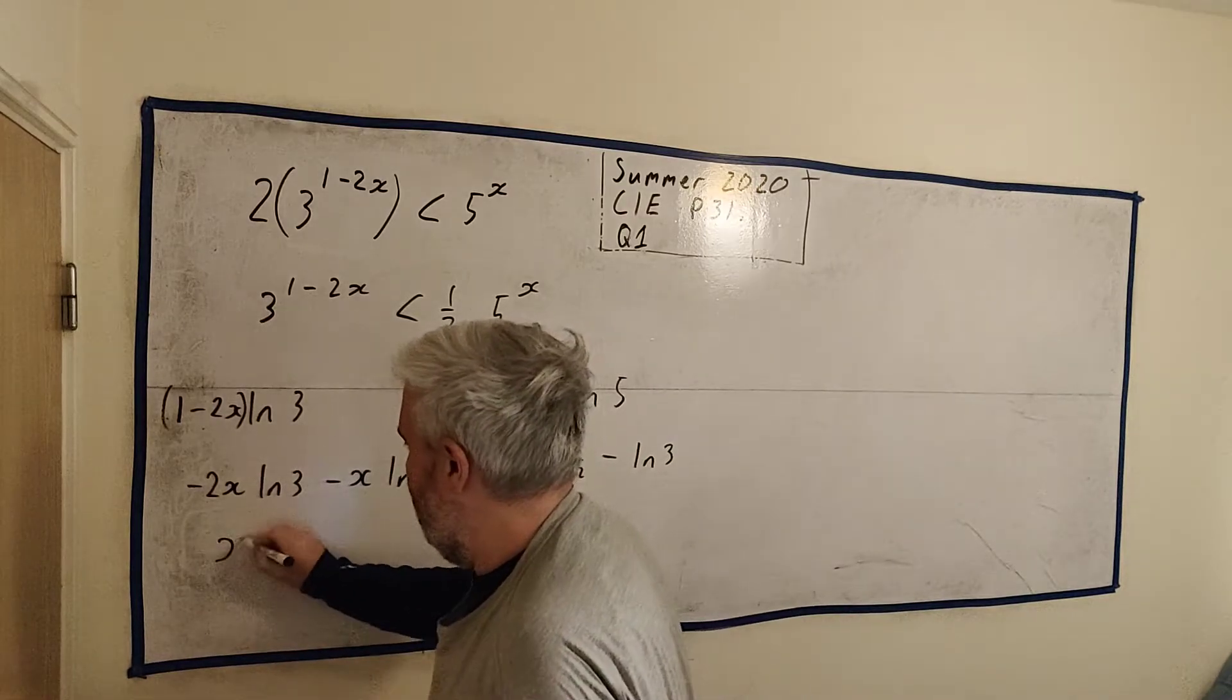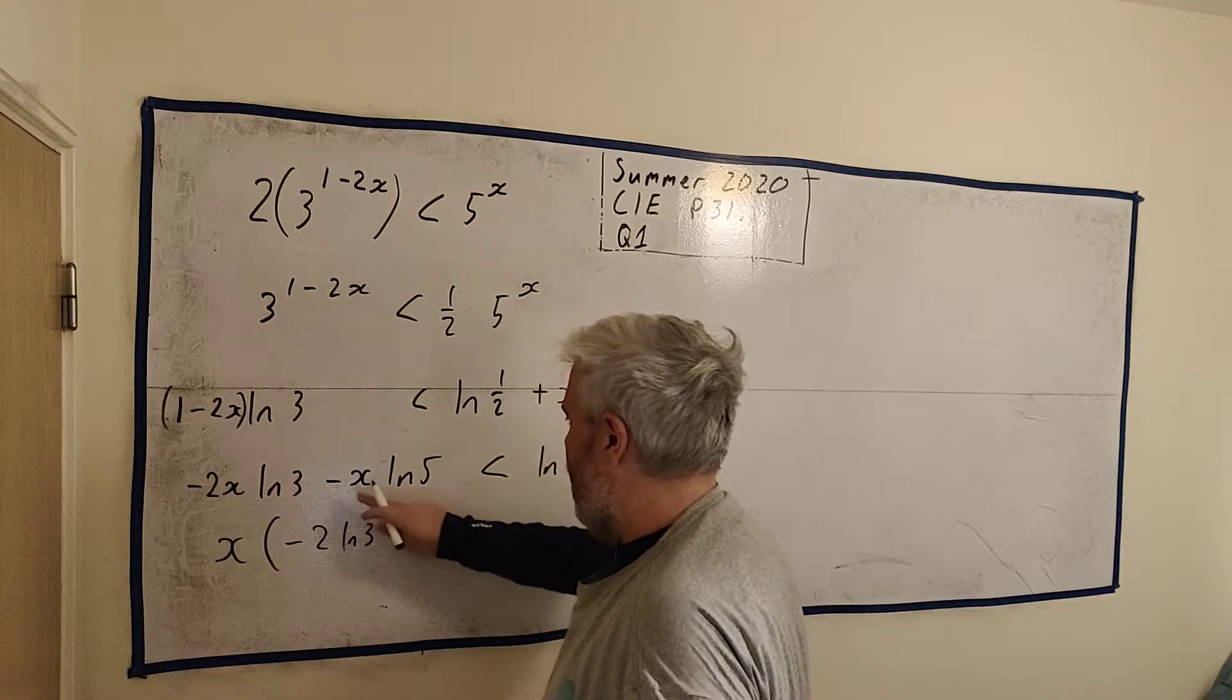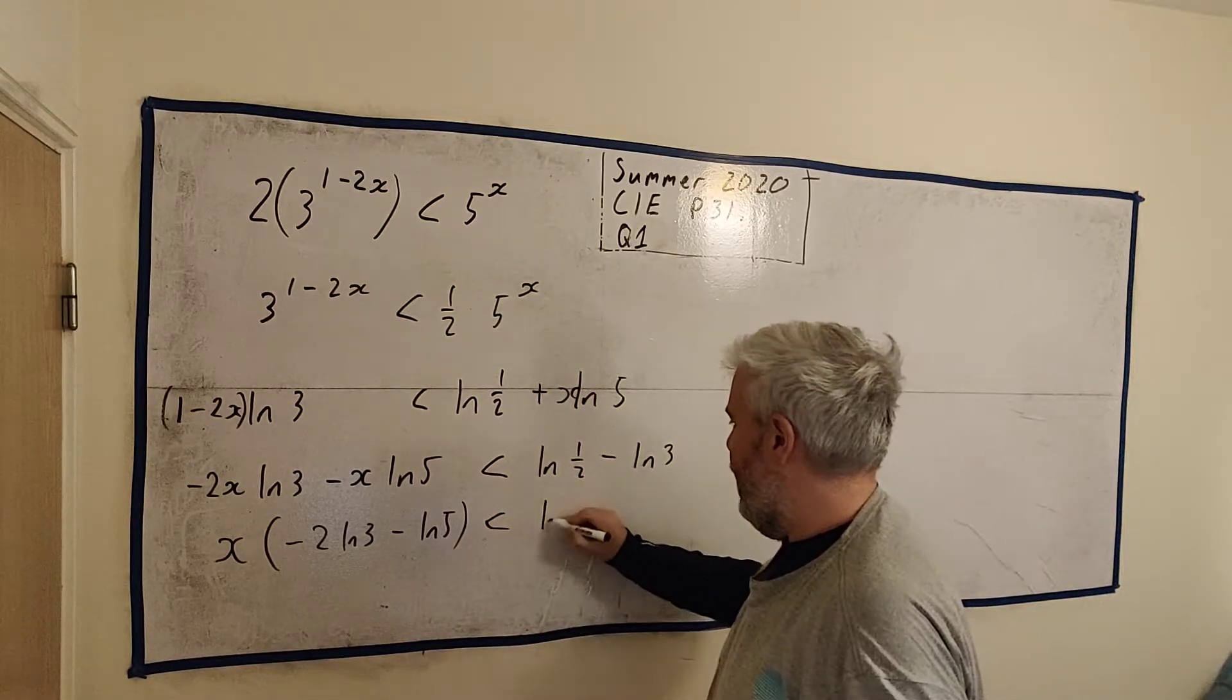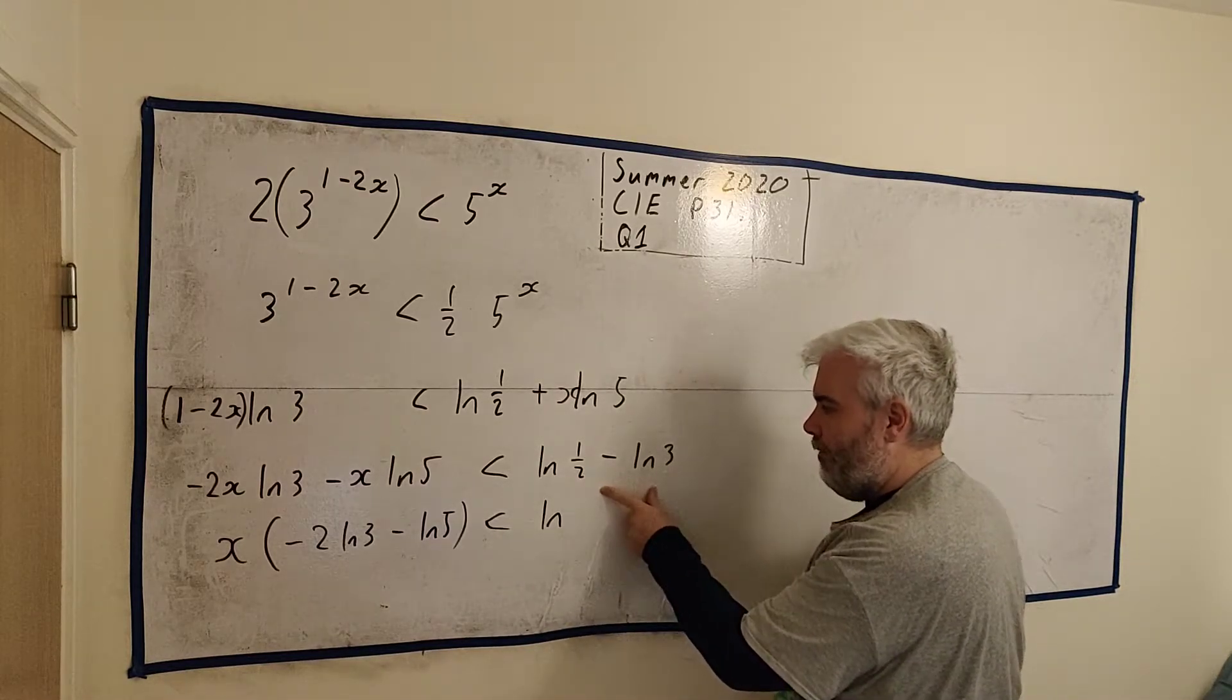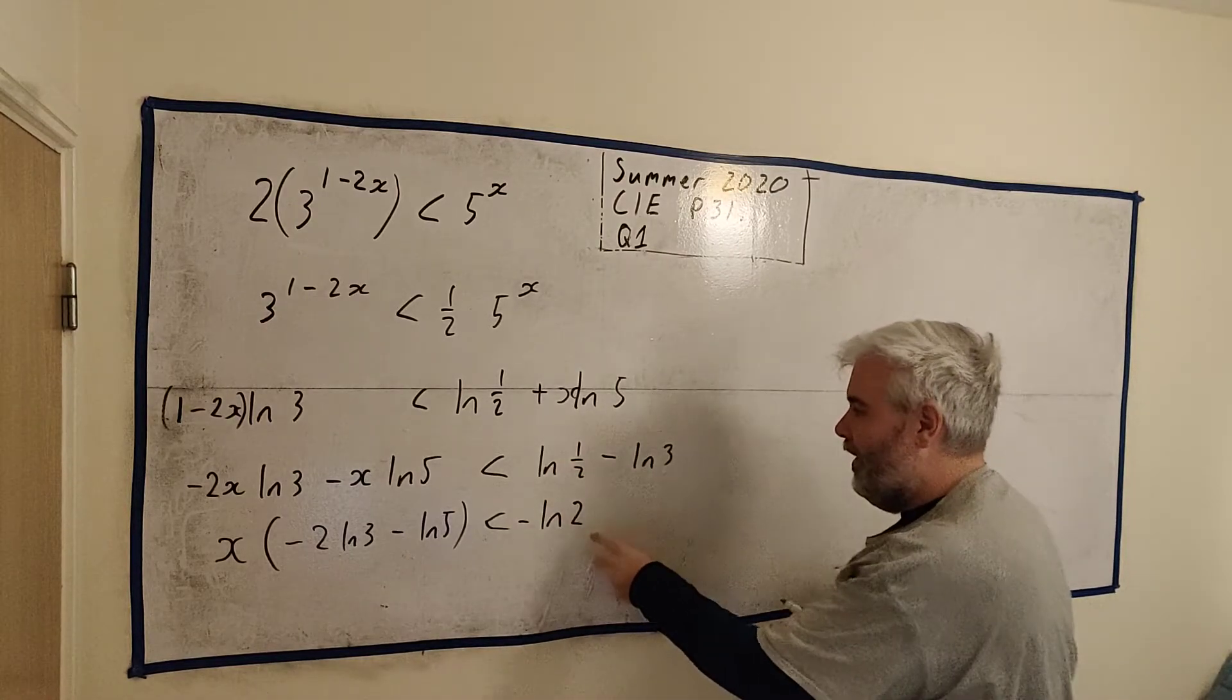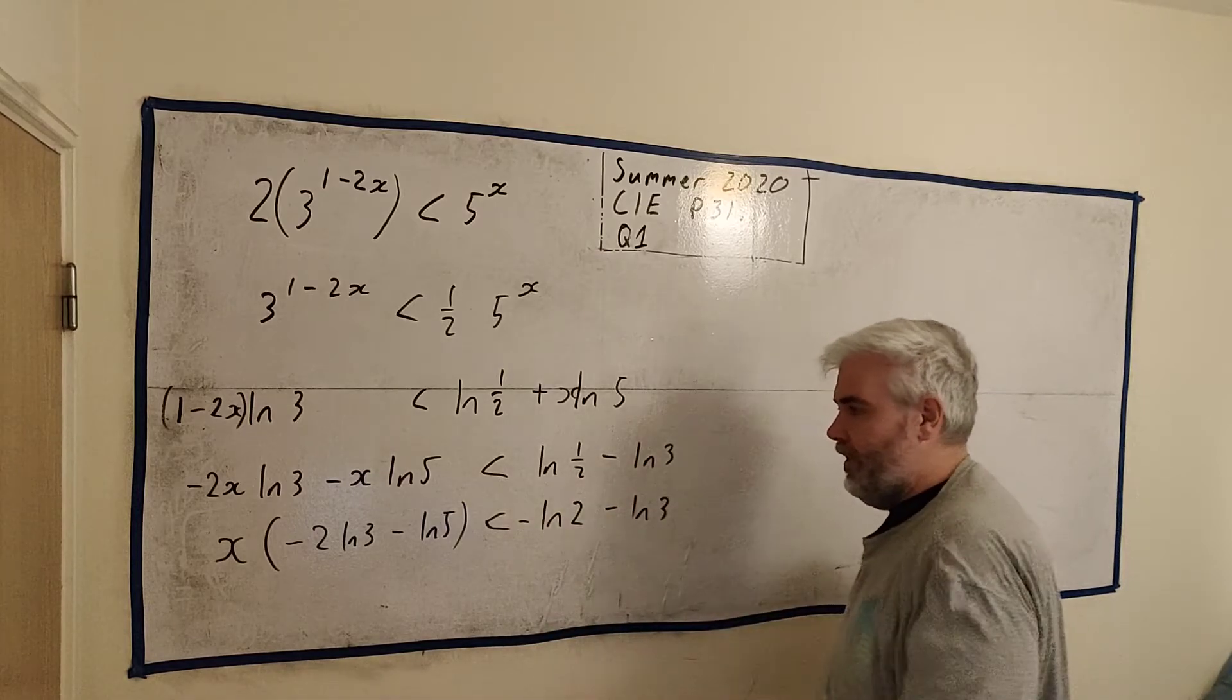Okay, let's take x out of both of these. We have x here. Left in would be minus 2 natural log 3. And this would be minus natural log 5 is less than natural log... Right, here's another one where we have a rule. We have natural log 1 half. Actually, you know what? Let's change this to minus natural log 2 first of all. It would be easier than writing 1 half every time. Natural log 3. And we'll combine these in a moment.